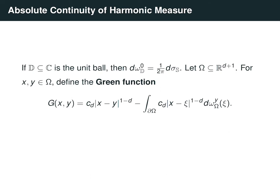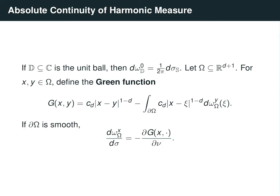For more general domains, we can also write down what harmonic measure is using Green's function. Recall that the Green's function is the fundamental solution |x − y| minus the harmonic extension of the fundamental solution, obtained by integrating |x − c|^(1−d) against harmonic measure with pole at y. So if we have a domain that has smooth boundary, then harmonic measure is absolutely continuous with respect to surface measure. In fact, the density of harmonic measure with respect to surface measure is just minus the normal derivative of Green's function at the boundary. This uses techniques from the first chapter of Evans' PDE book.